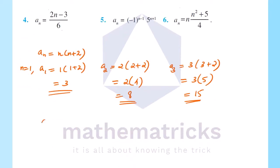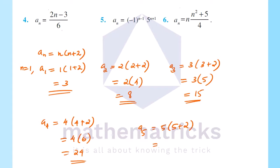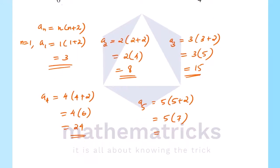Next, a4: when n equals 4, 4 into (4 plus 2), that is equal to 4 into 6, equal to 24. Next, a5: when n equals 5, 5 into (5 plus 2), that is equal to 5 into 7, equal to 35.